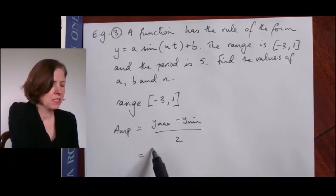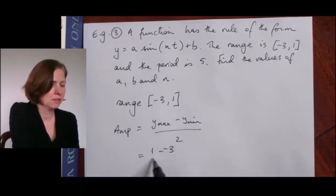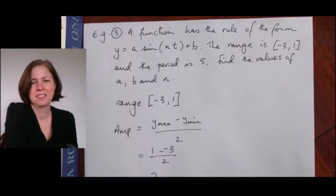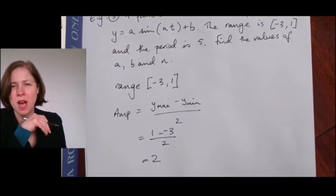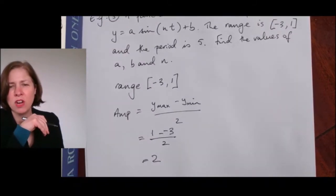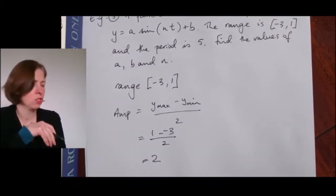The y-max is one — this is the same as the last one, I didn't do that on purpose. One minus negative three over two gives me two.